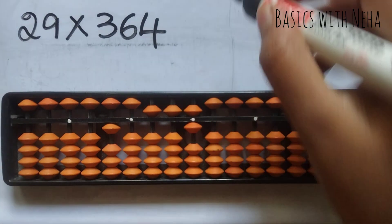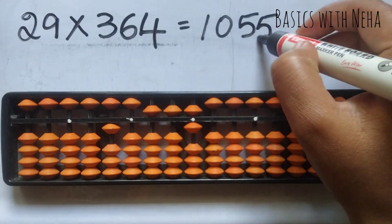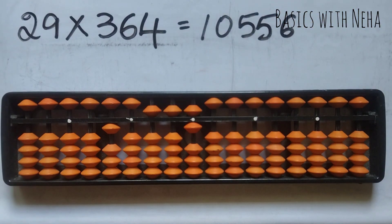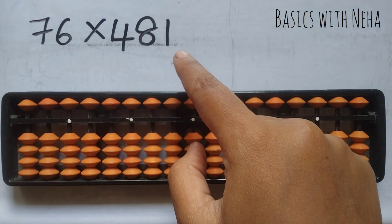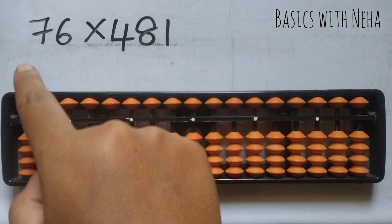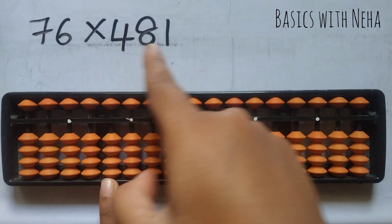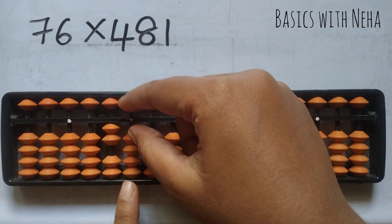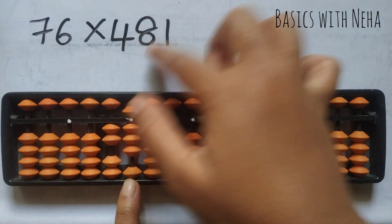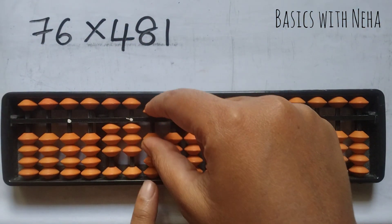So the answer is 10,556. The next question: 76 into 481. So first choose the 5th rod from the house pointer 1s rod to start, because there are 5 numbers. 7 fours are 28. 7 eights are 56. To place 5, it is plus 10 minus 5, and 6 directly.